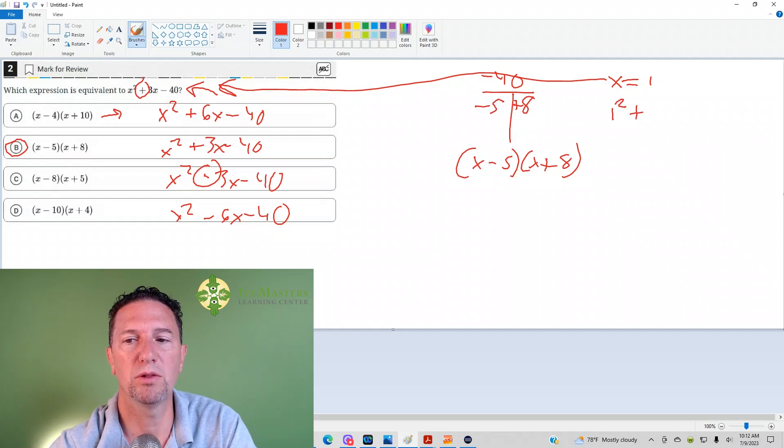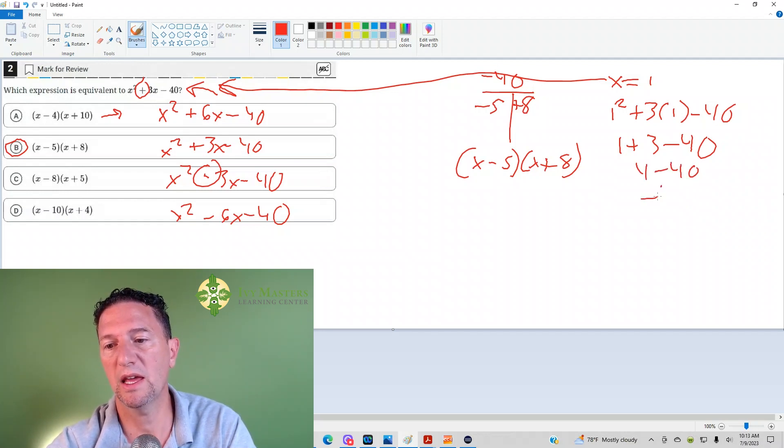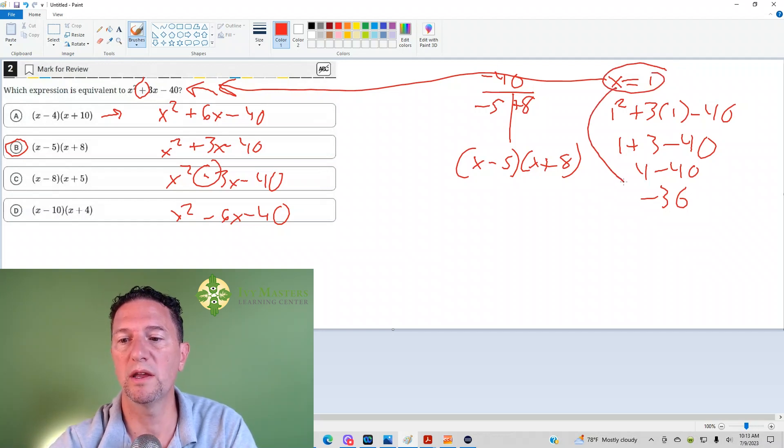And instead of x squared plus 3x minus 40, I have 1 squared plus 3 times 1 minus 40. If I plug 1 squared in, I get 1, and 3 times 1 will be 3 minus 40. And then I get 4 minus 40, and I get negative 36. So when x equals 1, what I get as my answer is negative 36.